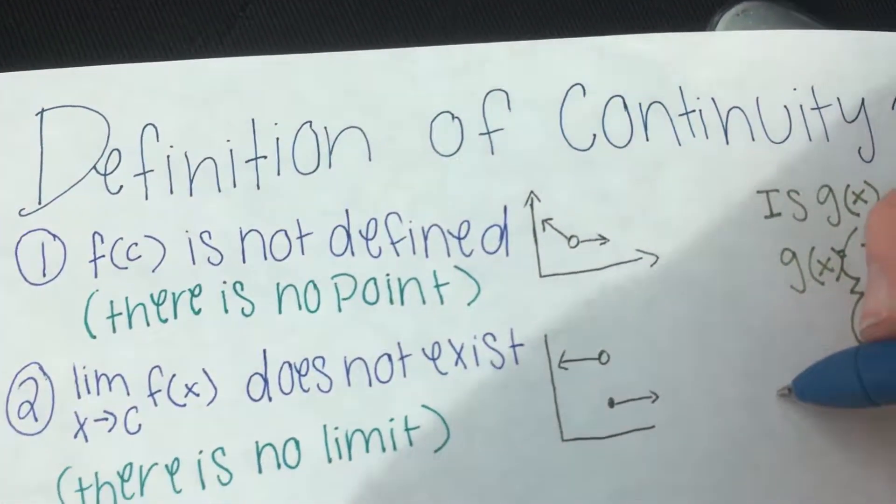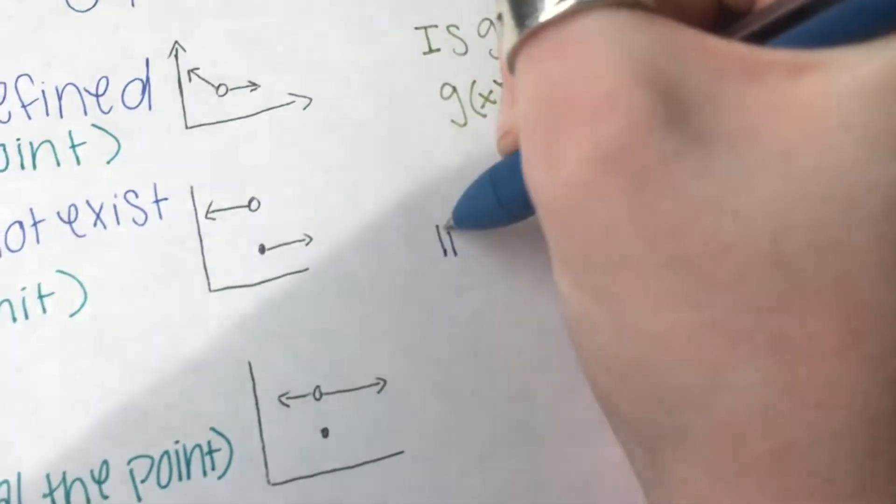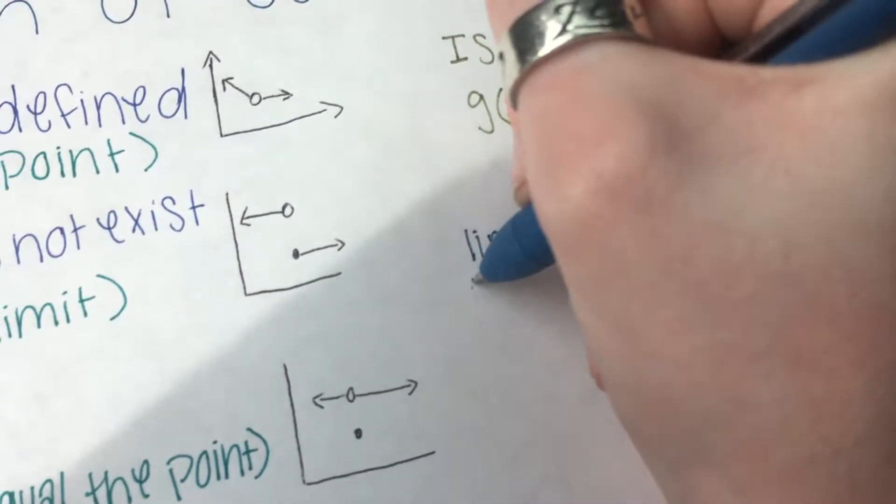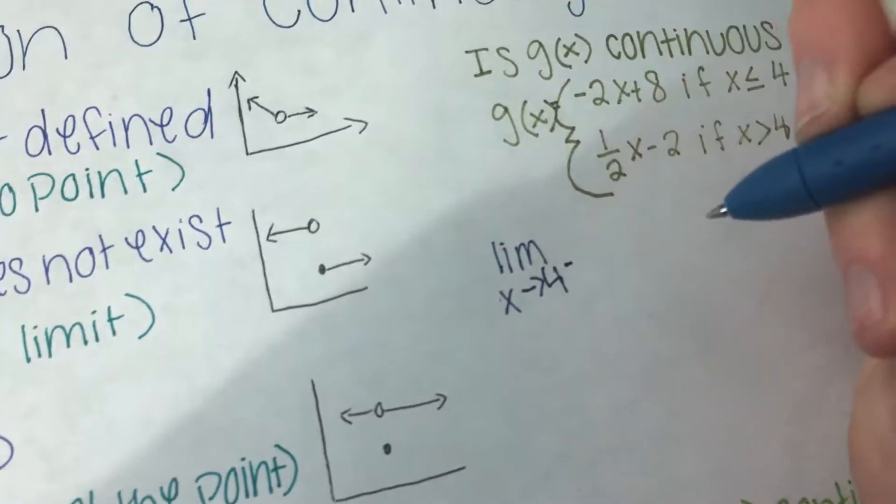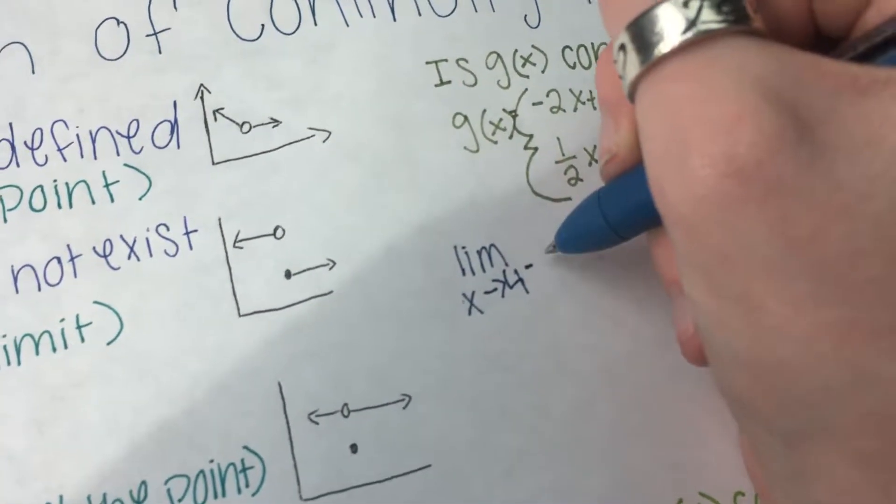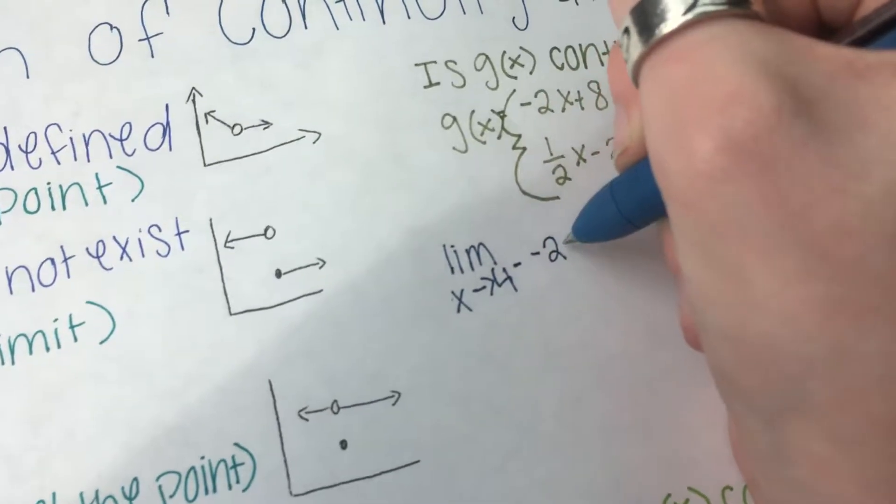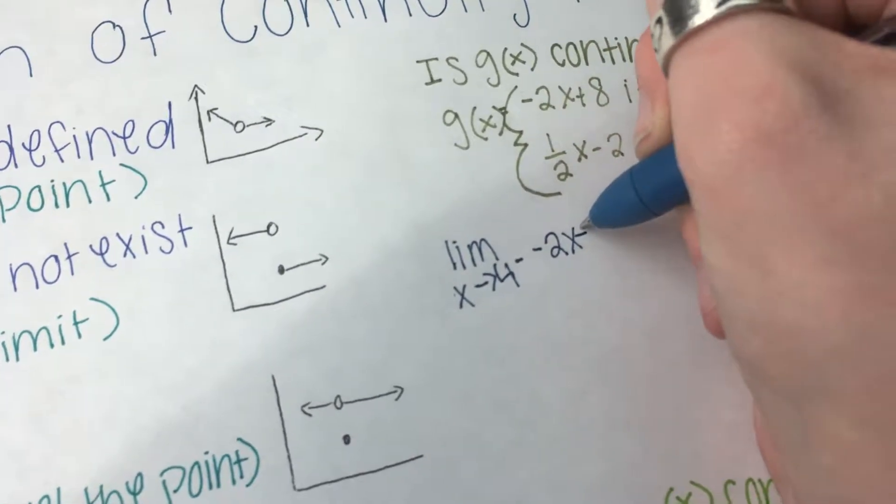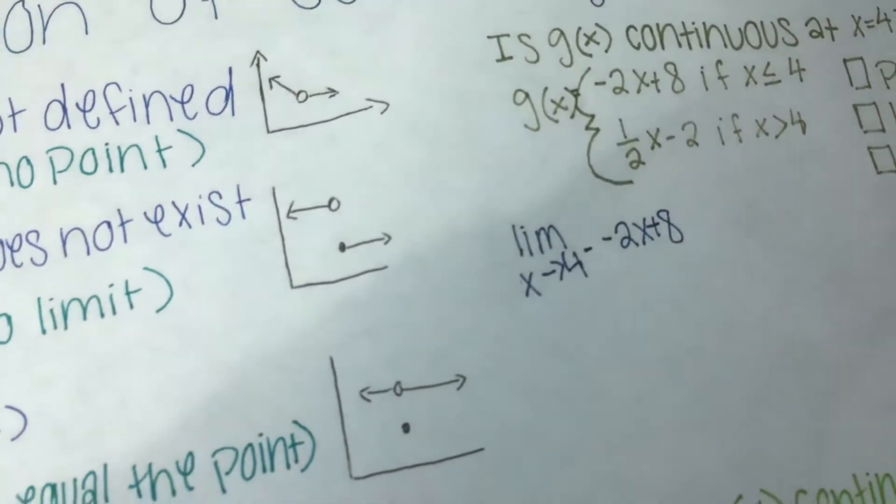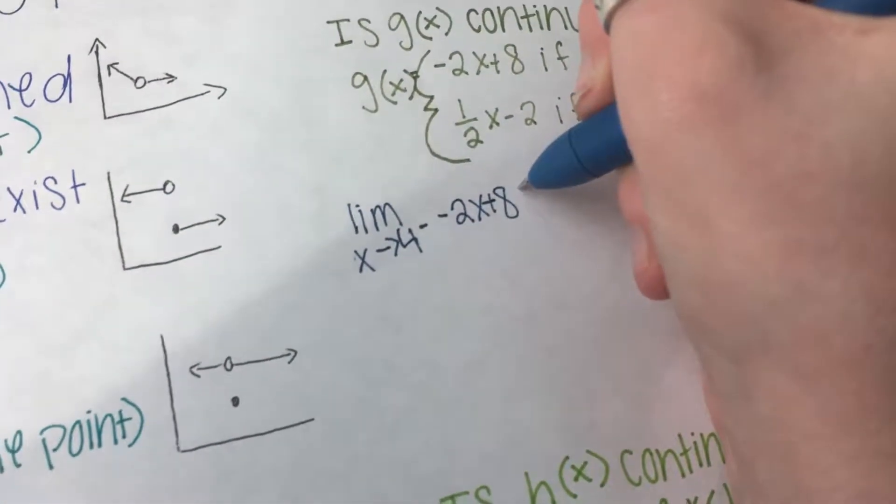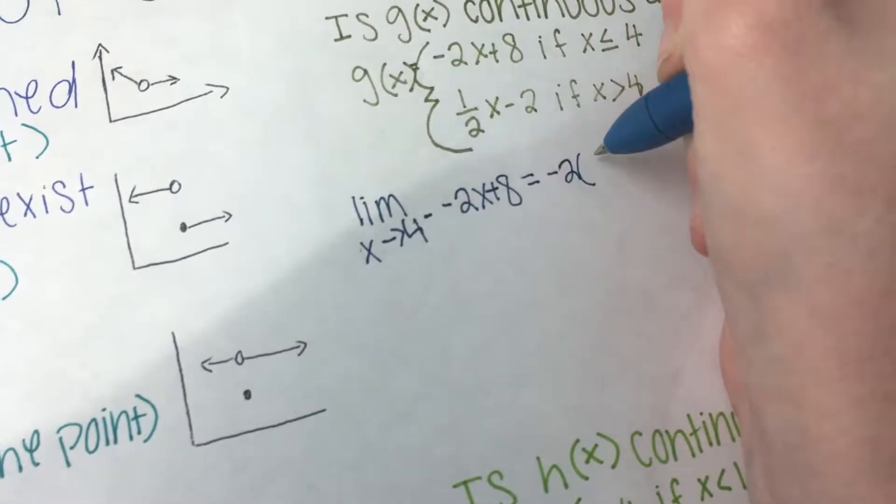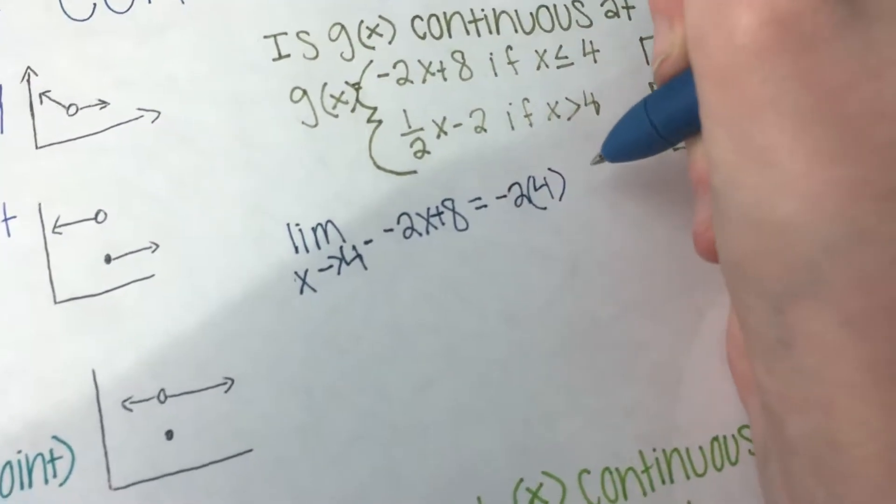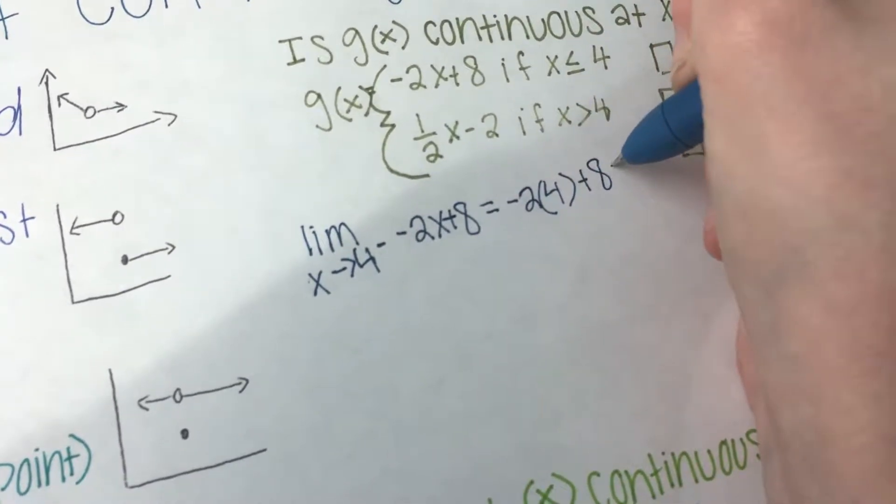So if we solve, we're going to solve for it from the left first. So we do the limit as x approaches 4 from the left is negative 2x plus 8. So what we can do is we can just plug that in, and so that is equal to negative 2 times 4 plus 8.